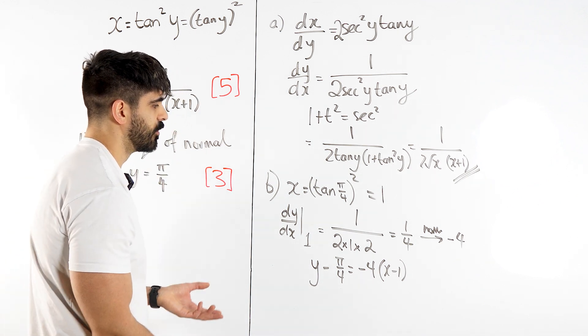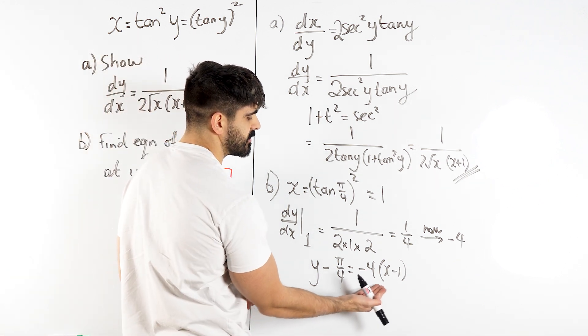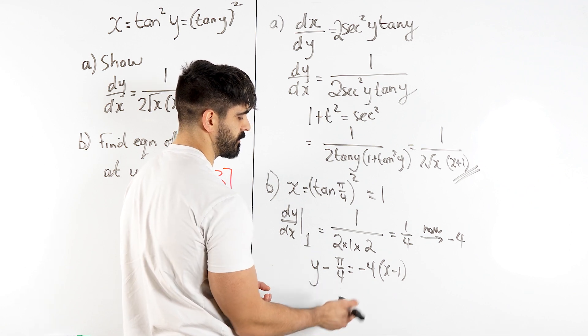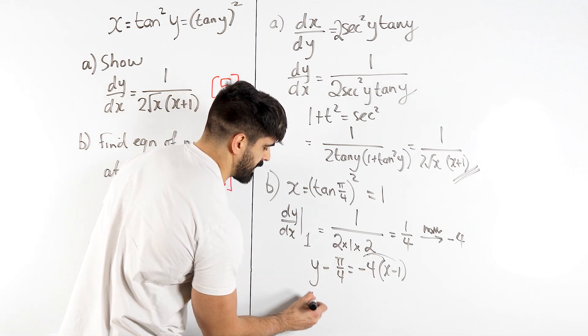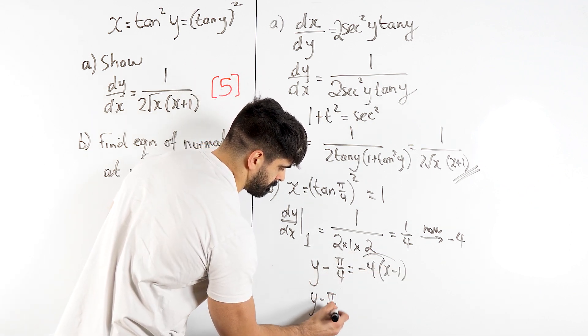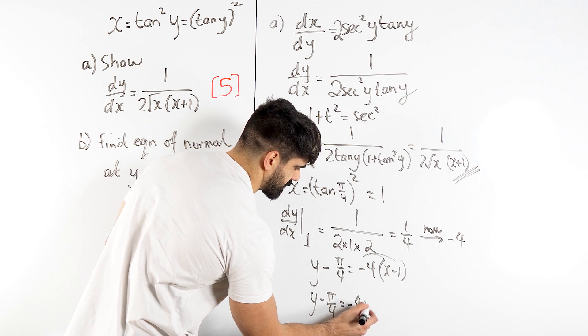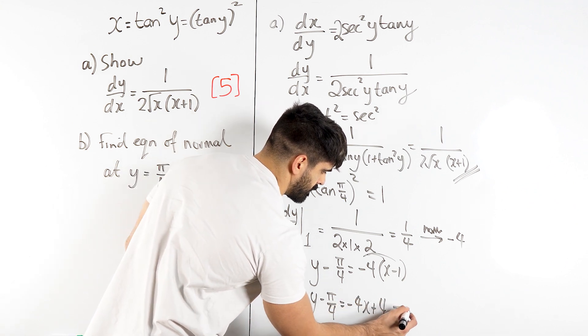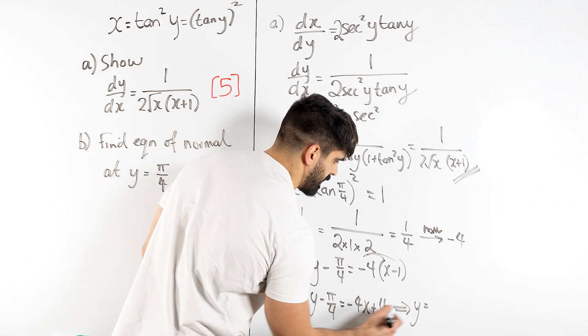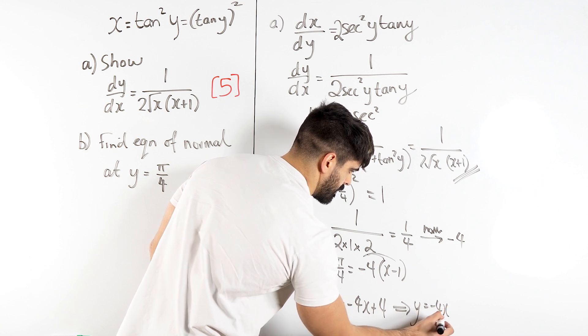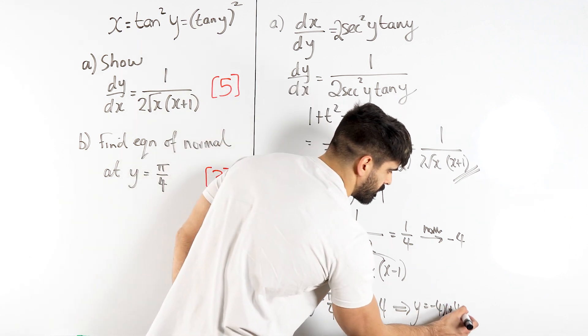Now they didn't give us a particular form. I usually say if the gradient is a fraction, you multiply through. But if it's not, just expand. So we get minus 4x plus 4, and then we have y equals minus 4x plus 4, and then plus pi over 4.